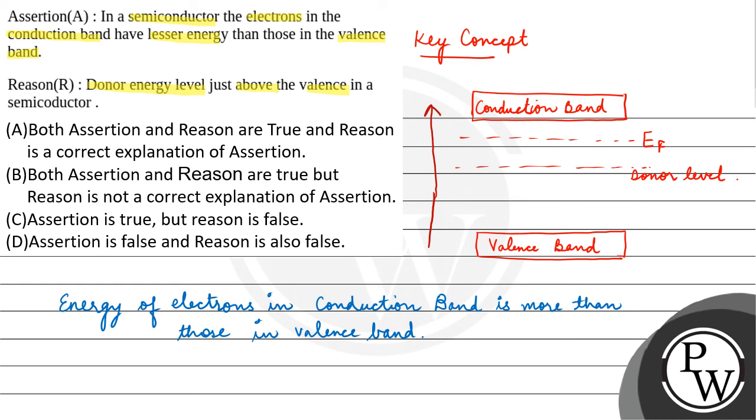So your reason is also false. So final answer is option D: Assertion is false and reason is also false. Hope you understood it well. Best of luck.